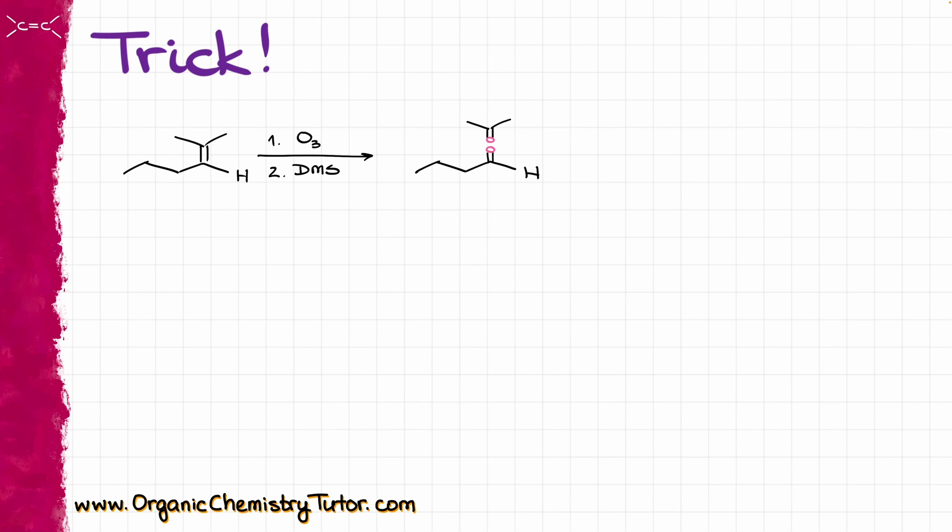Now, the important thing here to pay attention to is the nature of your workup. So, here I have DMS, which is a reductive workup, which means that the hydrogen that I have on my alkene, well, I am going to be preserving that hydrogen, and nothing is going to change to it. But what if I had, let's say, the same starting material, but now, instead of a reductive workup, I have hydrogen peroxide, which is the oxidative workup.